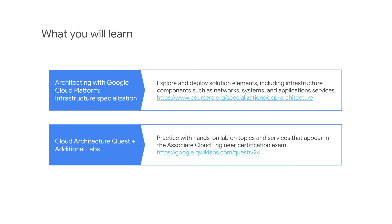Let's look at the training in a bit more detail. The Associate Cloud Engineer track has two main training components. The Architecting with Google Cloud Platform specialization on Coursera covers topics related to exploring and deploying solution elements, including infrastructure components such as networks, systems, and application services. The Cloud Architecture Quest on the QuickLabs platform is a set of hands-on labs that provide practice on topics and services that appear in the Associate Cloud Engineer certification exam.